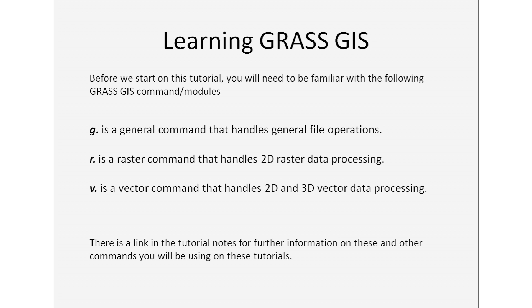Before we start, you need to familiarize yourself with a few commands and modules for GRASS GIS. G dot is a general command that handles general file operations. R dot is a raster command that handles two-dimensional raster data processing. V dot is a vector command that handles two-dimensional and three-dimensional vector data processing. There's a link in the tutorial notes for further information on these and other commands that you will be using throughout the whole series of tutorials.